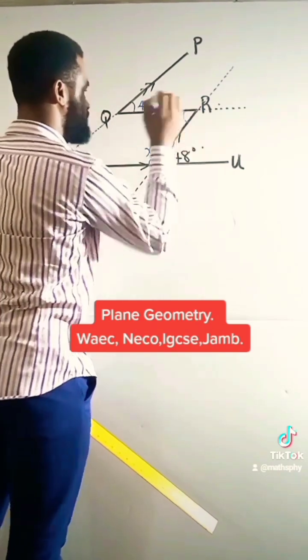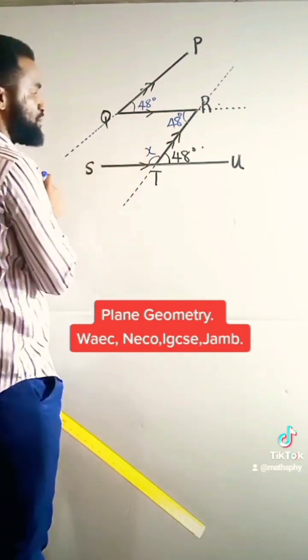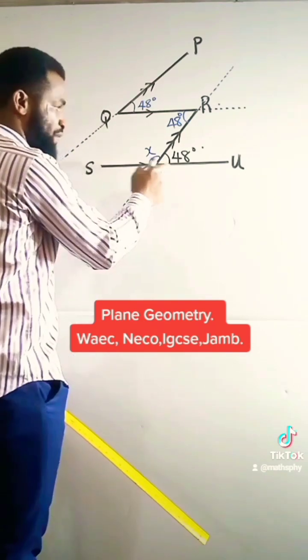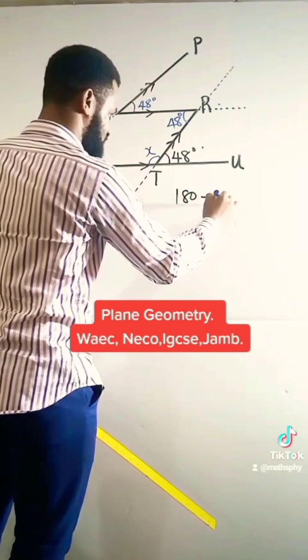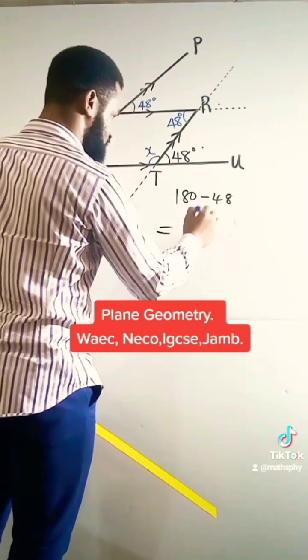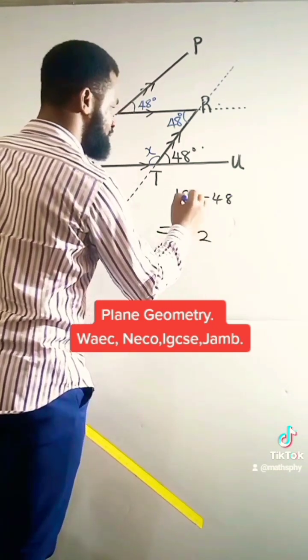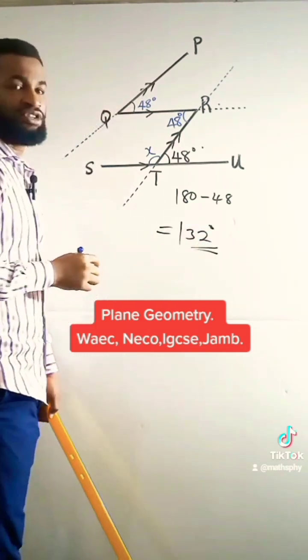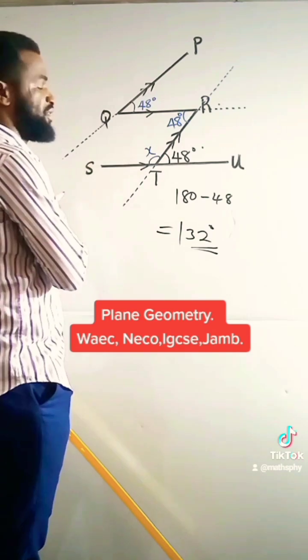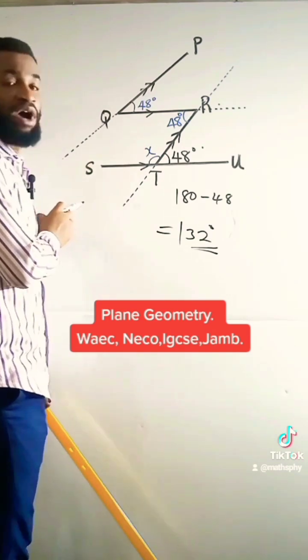and here will be 48 also. Now how do I get my x? Sum of angles on a straight line: 180 minus 48, which is equal to 132 degrees, because angles on a straight line give you 180.